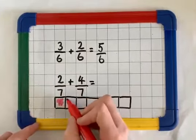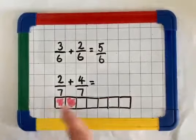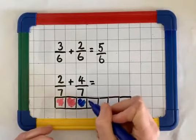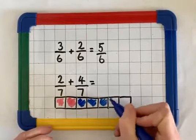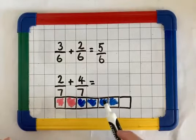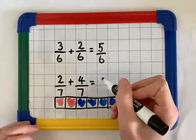2 sevenths, I can draw on my bar. So we've got 2 sevenths. And if we're adding 4 sevenths to that, we end up with 1, 2, 3, 4, 5, 6 sevenths.